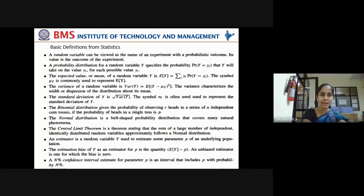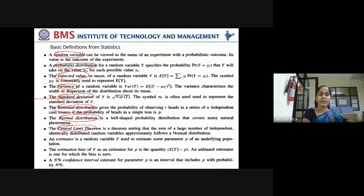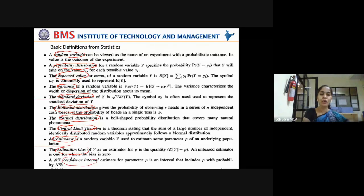We are going to see: what is a random variable, probability distribution, expected value or mean of a sample, variance of a random variable, standard deviation, binomial distribution, normal distribution, central limit theorem, estimator, estimation bias, and what is the confidence interval. I'm going to elaborate on all these by discussing different examples.